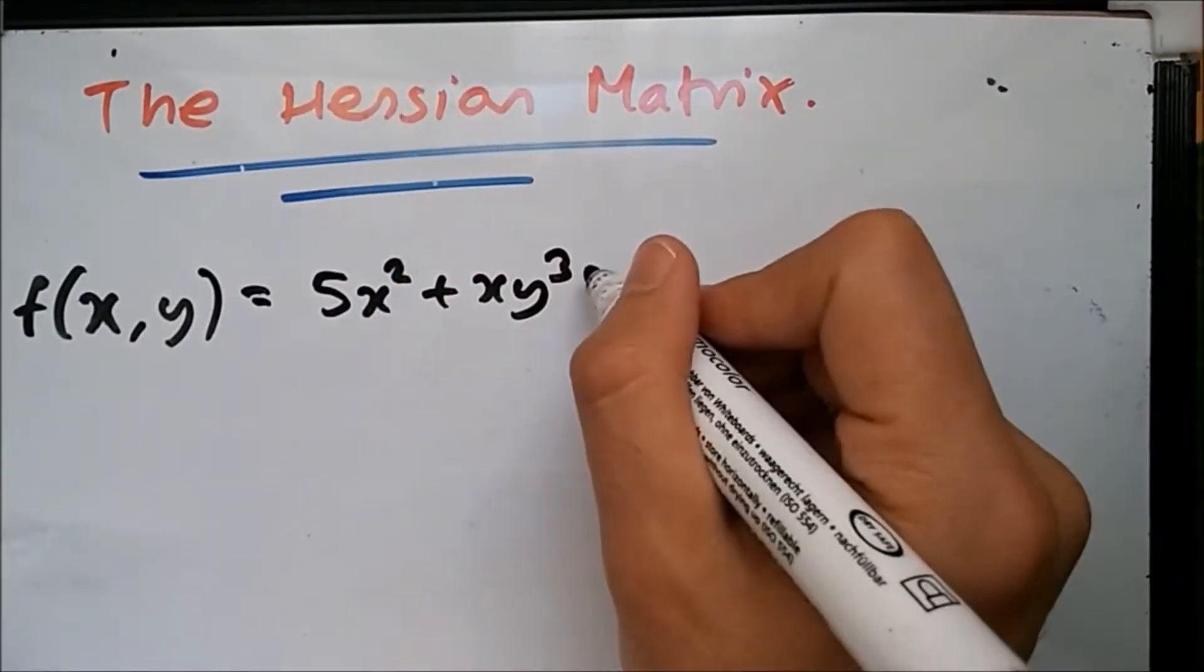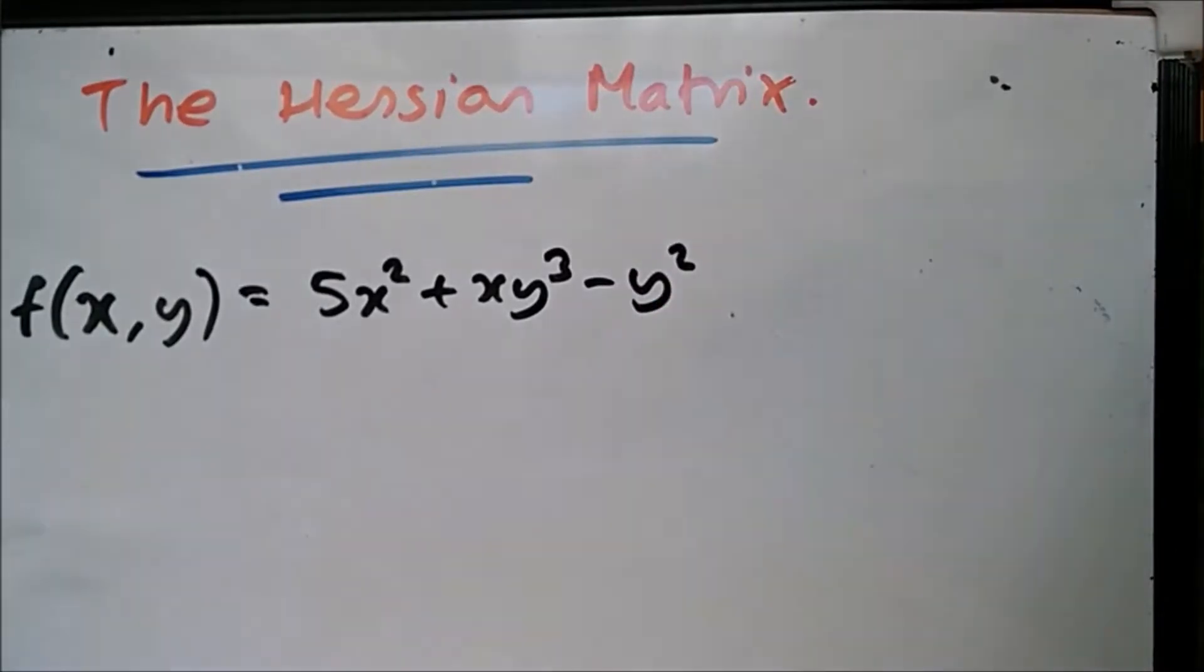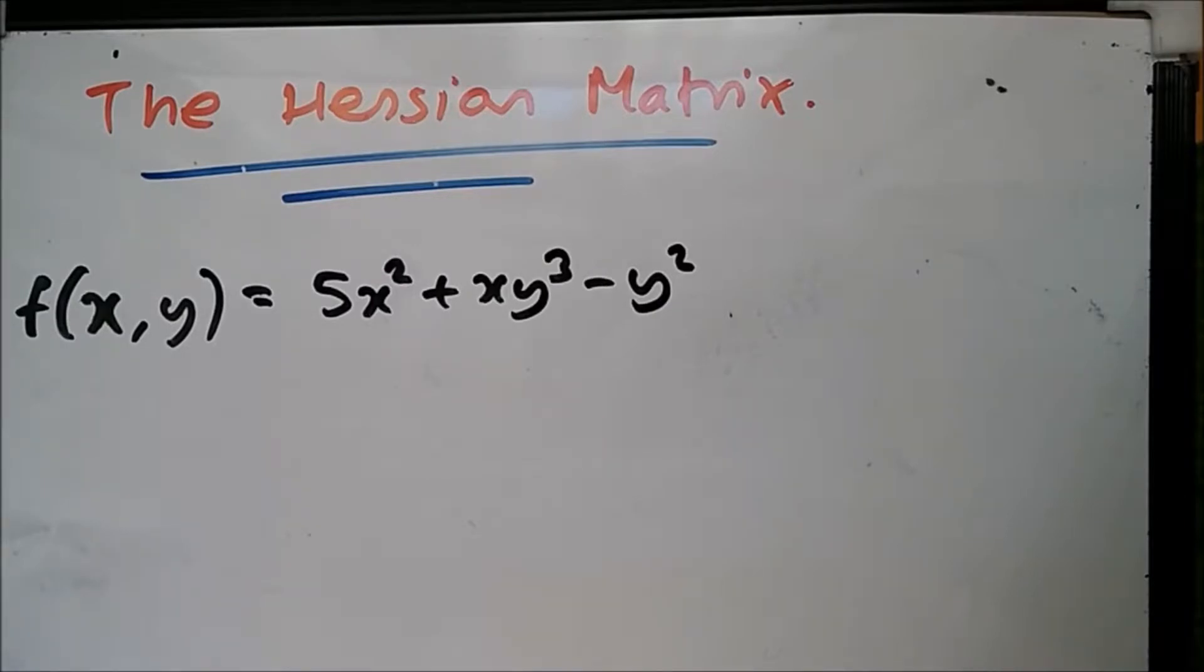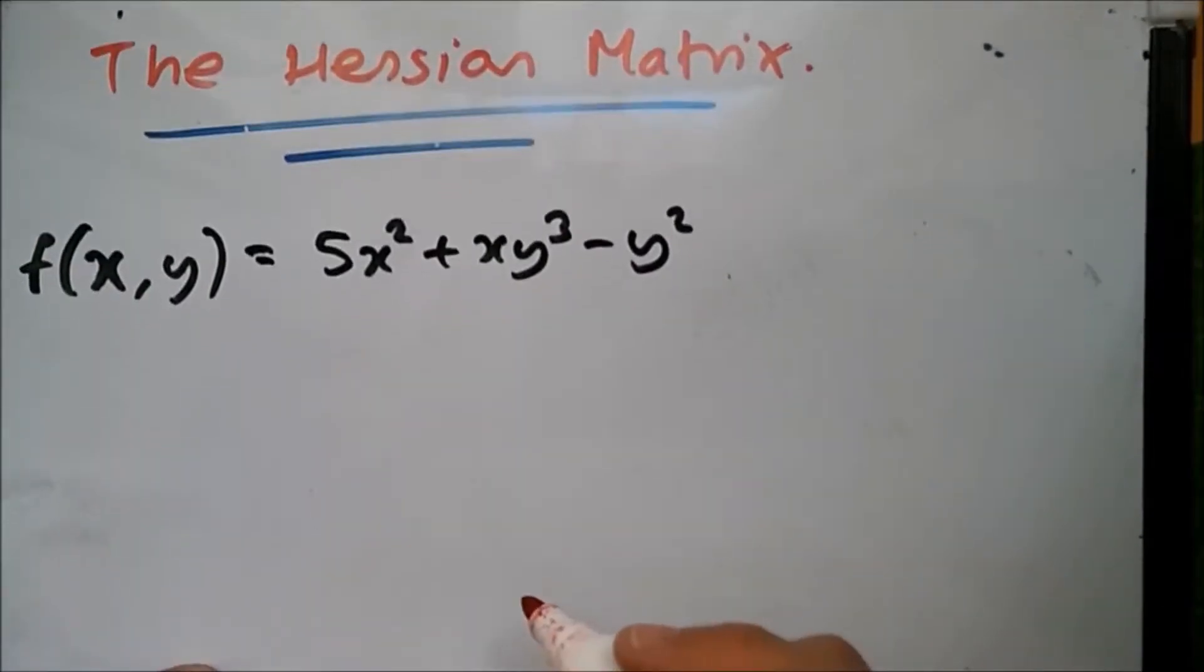Now all we have to do is differentiate this twice. We need fxx, fxy, and fyy. That's it. First we need the first partial derivatives.